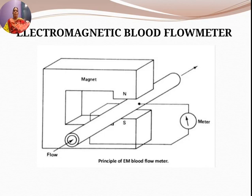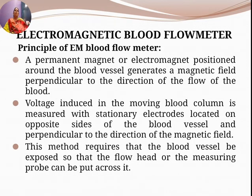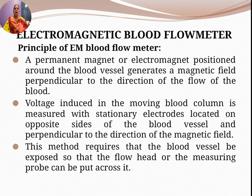In the construction of the electromagnetic blood flow meter, a permanent magnet with north and south poles is positioned around the blood vessel and blood is allowed to flow through the vessel. The permanent magnet generates a magnetic field perpendicular to the direction of flow of the fluid.